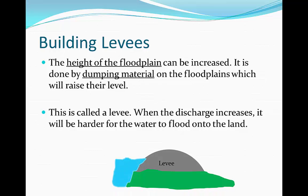As you can see, the discharge of the river would ordinarily flow onto the land, but if we build this levee the discharge isn't going to be able to get onto the land because it's being blocked. As a result, there is no flooding.